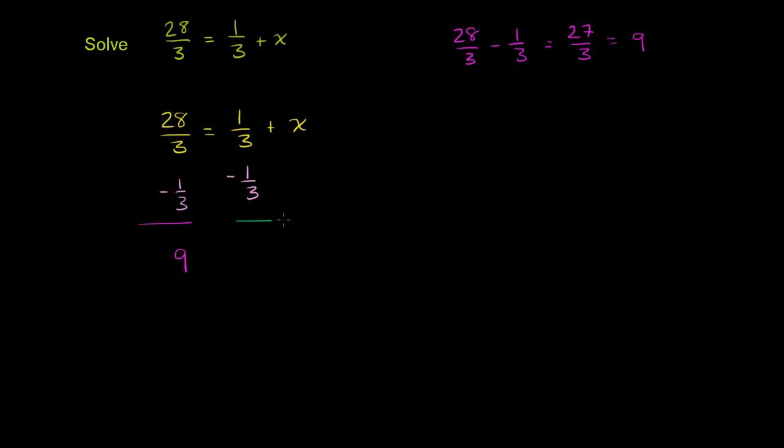On the right-hand side, 1/3 - 1/3 cancels out, and we're just left with x. So we're done. We've solved for x: x = 9.